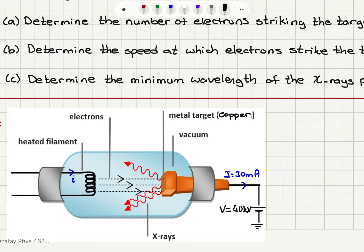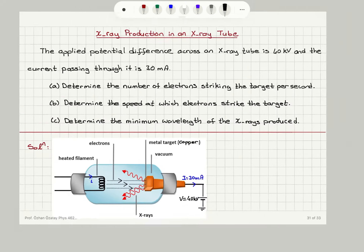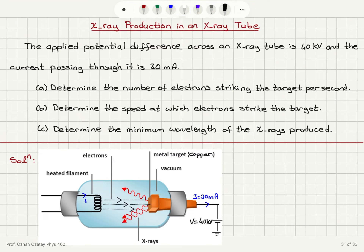The target in this problem is kept at a potential difference of 40 kV with respect to ground, and we observe a 30 mA current flowing through this circuit. This metal target, for example, could be copper.